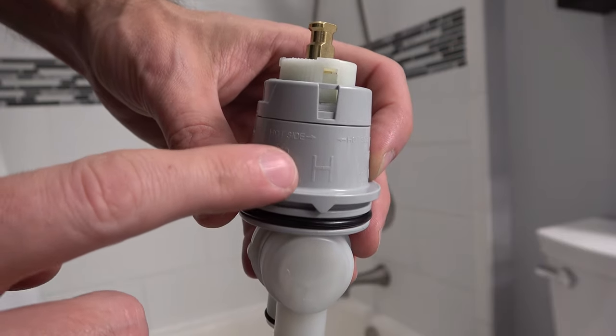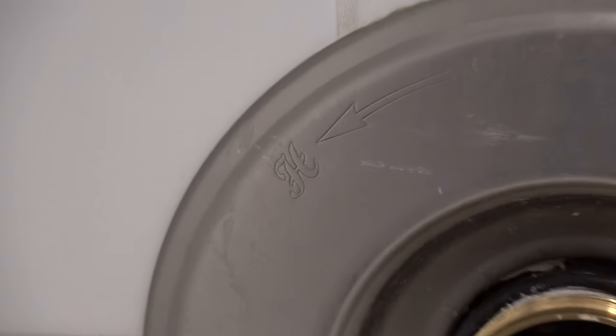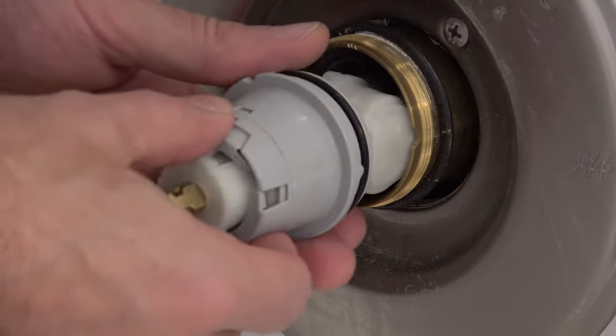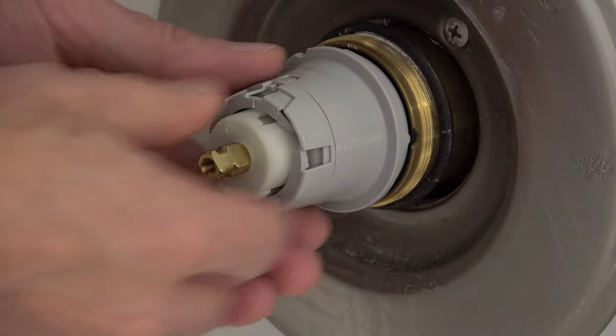Locate the side of the cartridge that says hot or has an H, and make sure that matches the hot side of your faucet. Push in the new cartridge, making sure to line up the arrow.